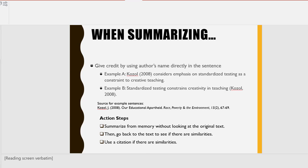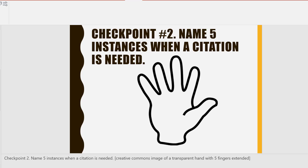Action steps: One, summarize from memory without looking at the original text. Two, then go back to the text and see if there are similarities. Three, use a citation if there are similarities. Checkpoint number two: name five instances when a citation is needed.